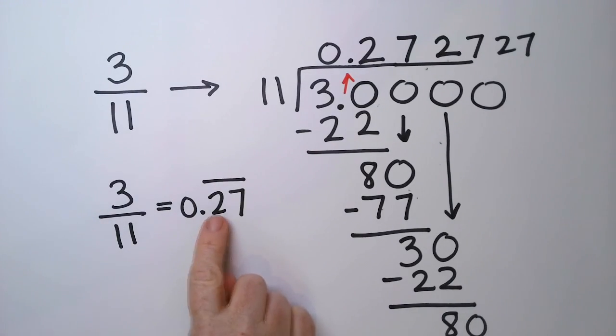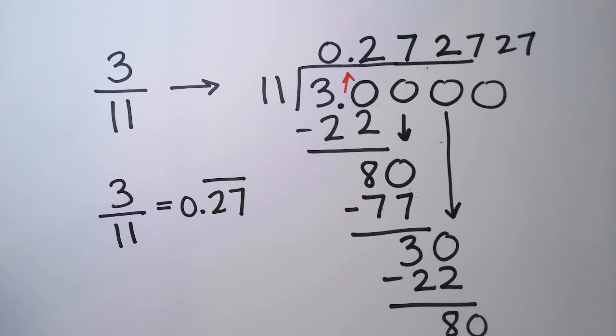And we write this as 3 over 11 equals 0.27 with a bar over it. And that simply means that it goes 0.272727 just like that.